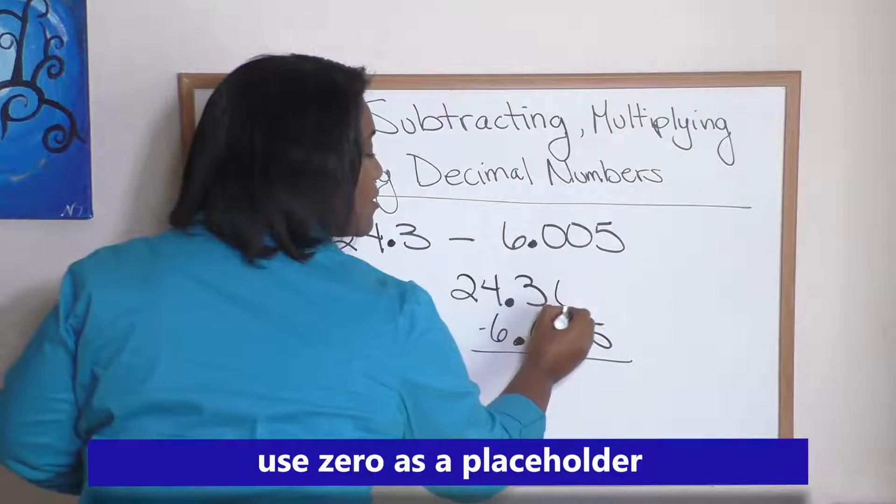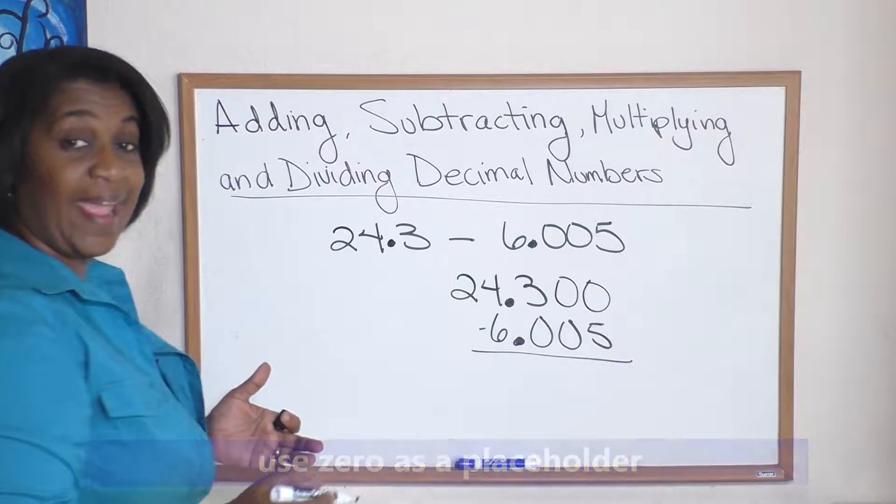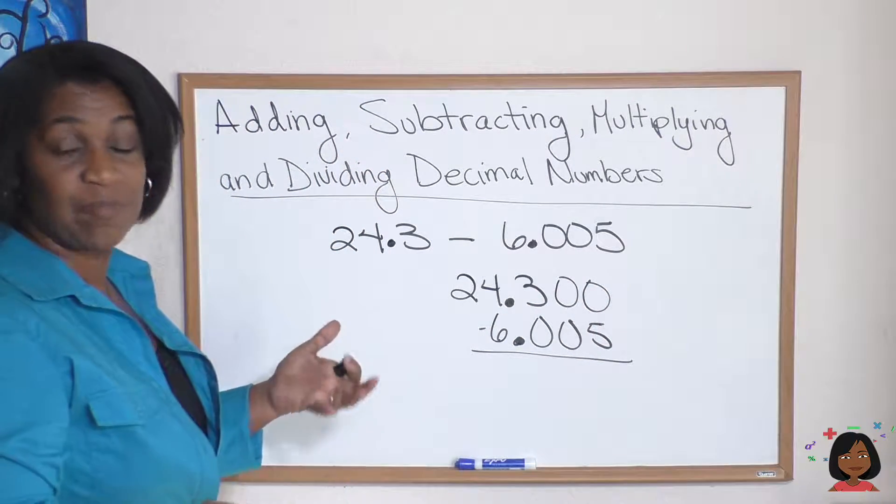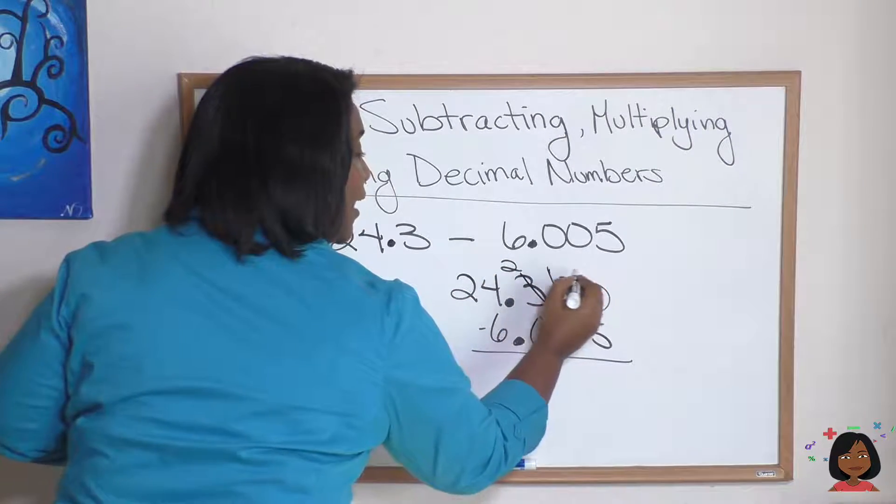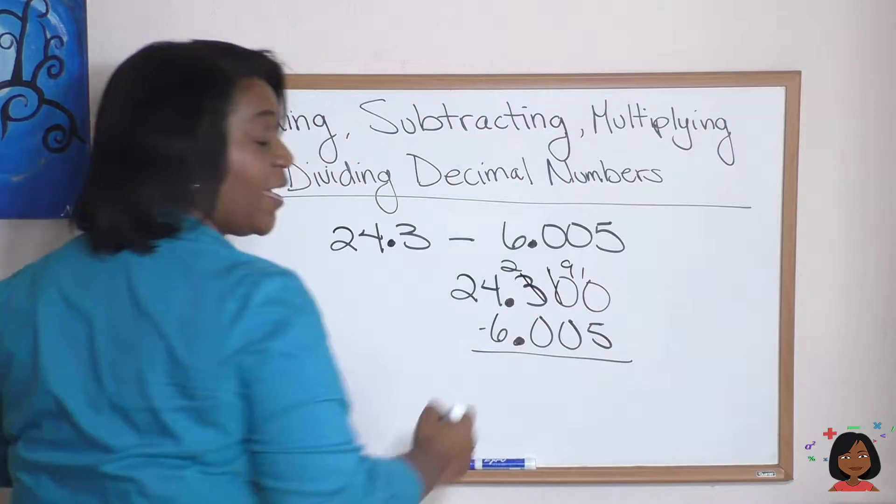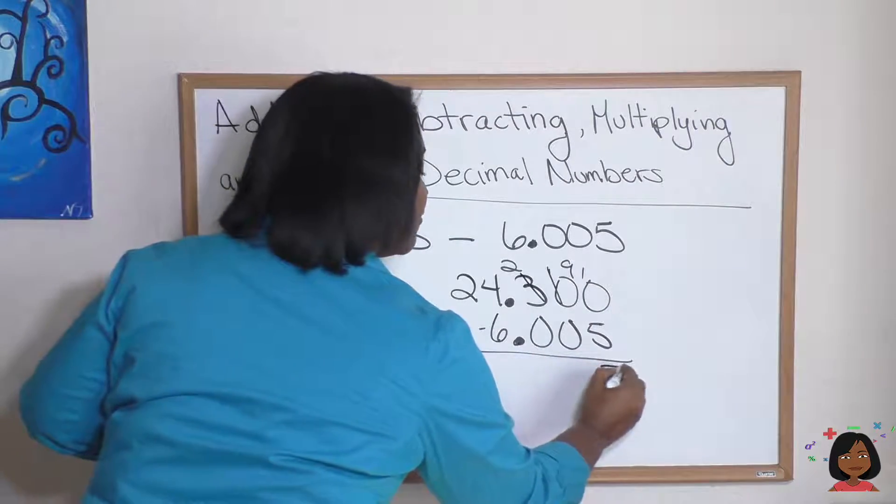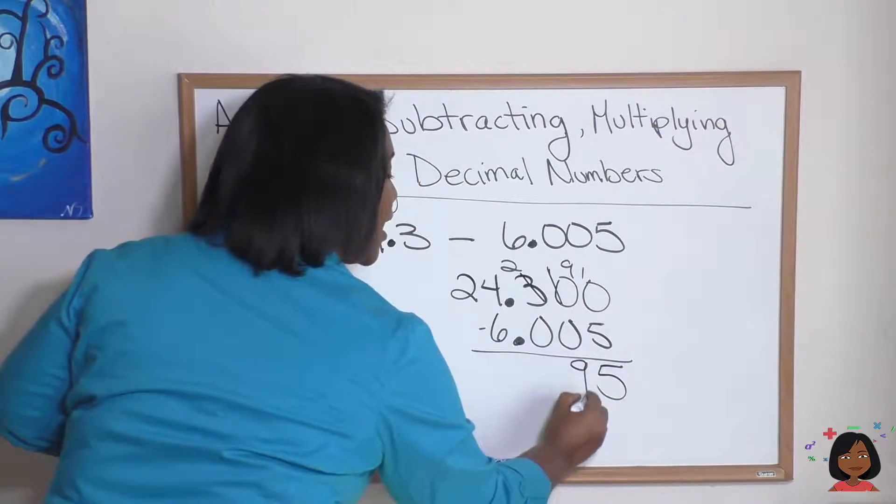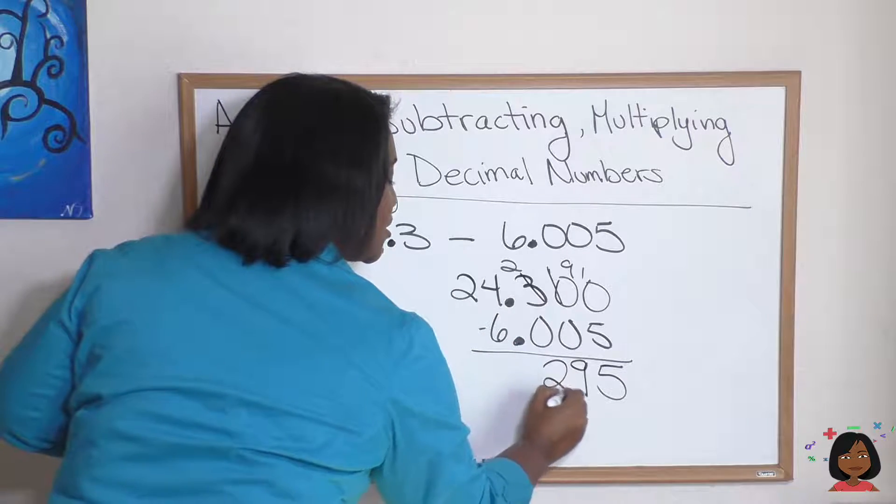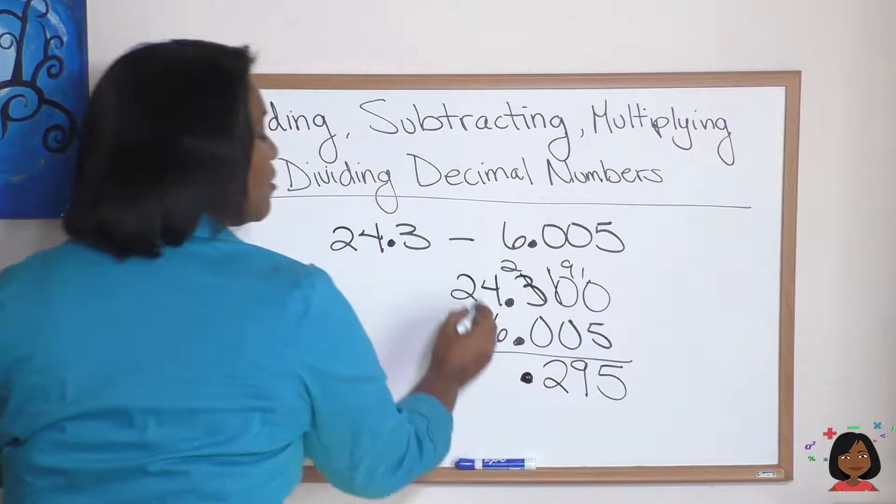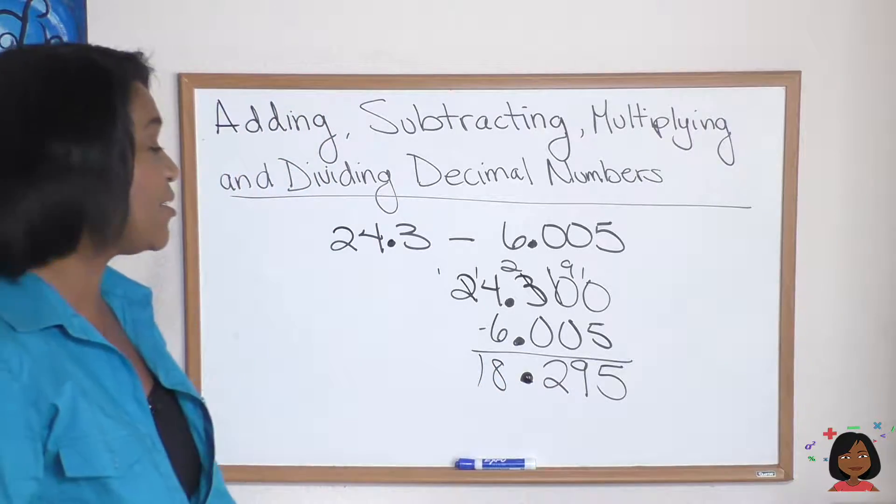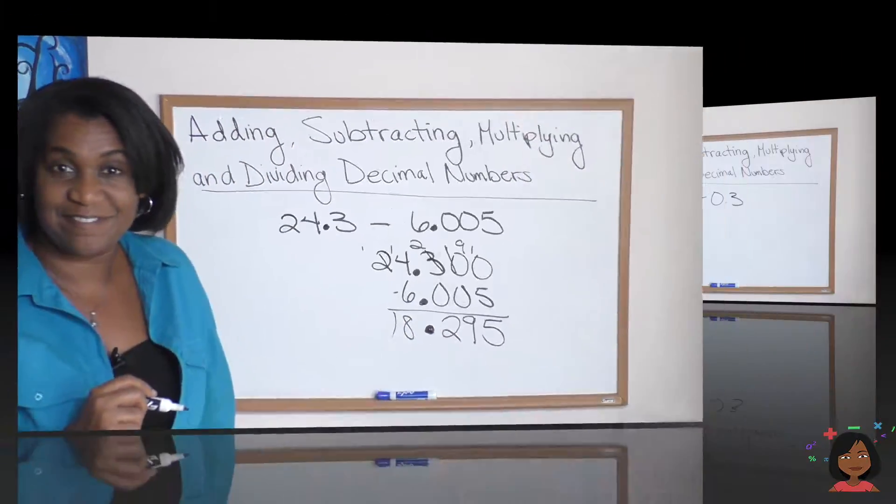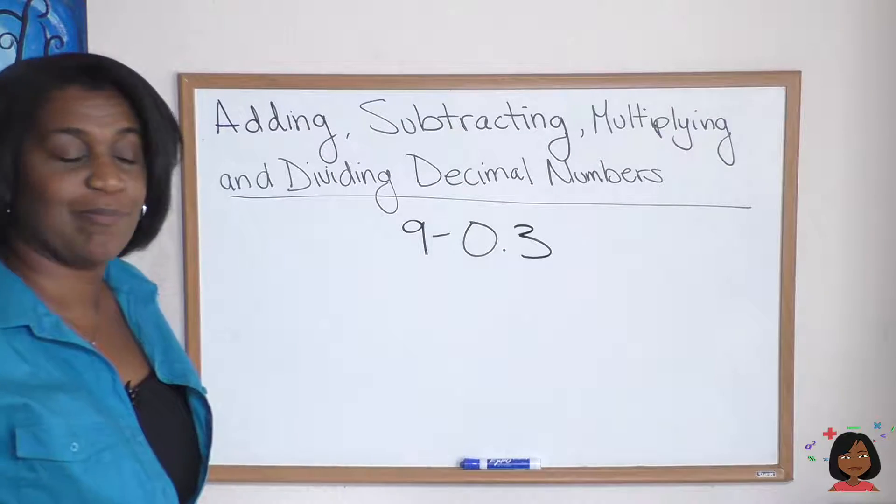Now we just go ahead and borrow as normal: 3, 2, 10 goes to 9, and 10 minus 5 is 5. 9 minus 0 is 9, 2 minus 0 is 2, there's my decimal, and I borrow again, and I have 18.295.